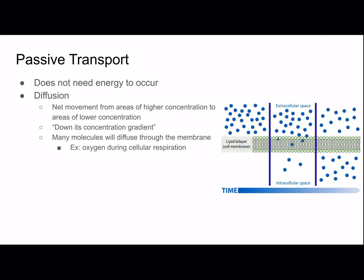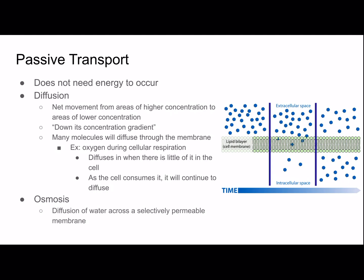For example, during cellular respiration oxygen diffuses in when there's little of it in the cell, and it continues to diffuse in because the cell consumes it. Osmosis is the diffusion of water across the selectively permeable membrane. When there's a high concentration of molecules they'll diffuse across the membrane to areas of lower concentration until equal on both sides, at which point molecules are still moving but at a stabilized rate.